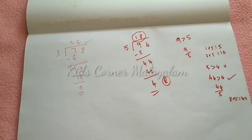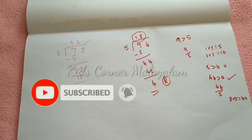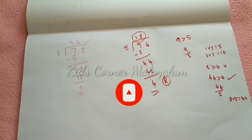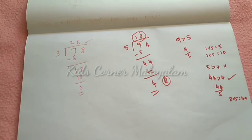Now we have divided a two-digit number by a one-digit number. We used 5 steps to do the division. Division can be done in an easy and simple way. We can do division in class the same way. Indians are not always comfortable with division, but if you follow the steps, you will be able to get the answer.